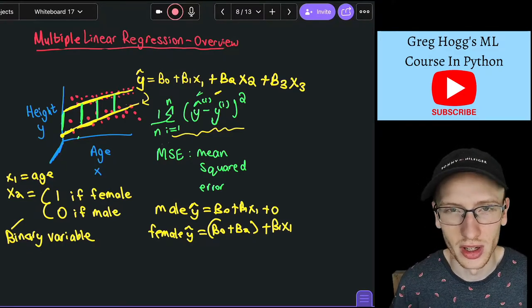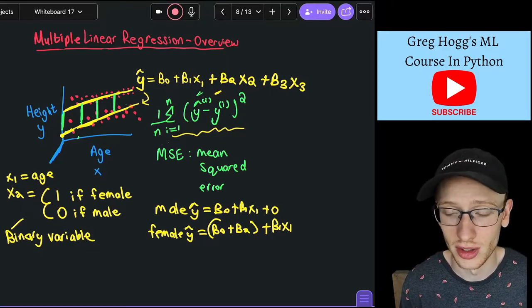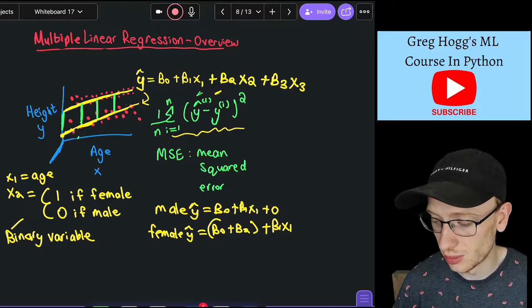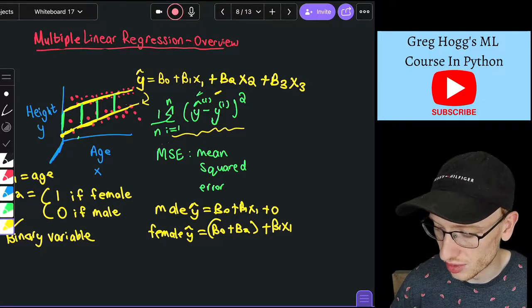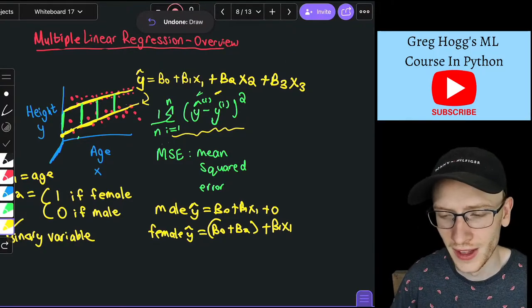Pretend that we had a hundred different beta values, beta 4, beta 5, beta 6, up until beta 100. And so you would have to write out all of the addition and multiplication of the slope value, the beta, times the corresponding input.